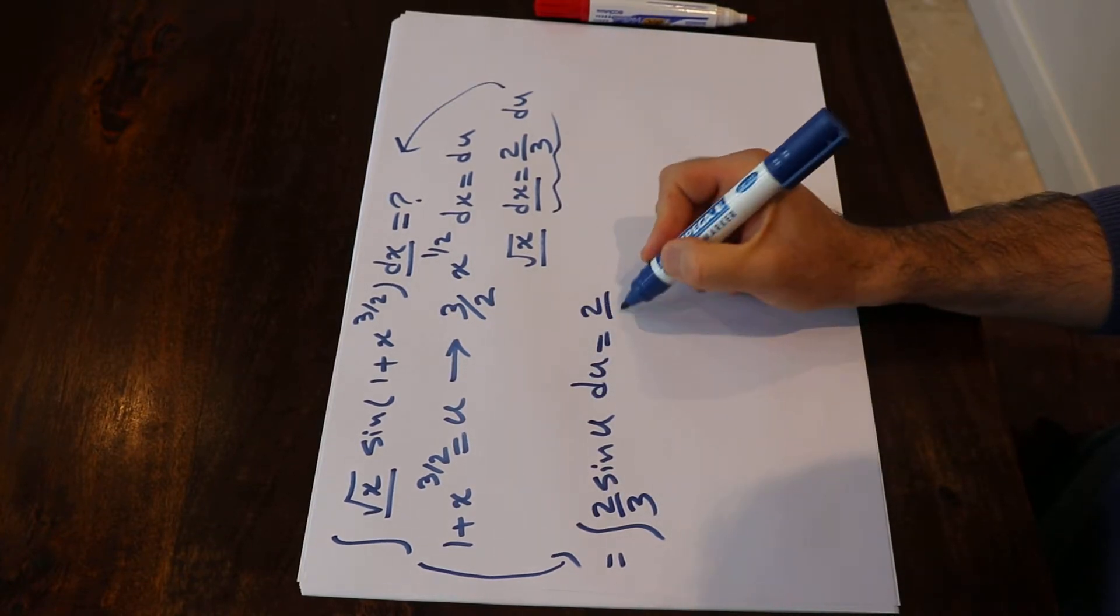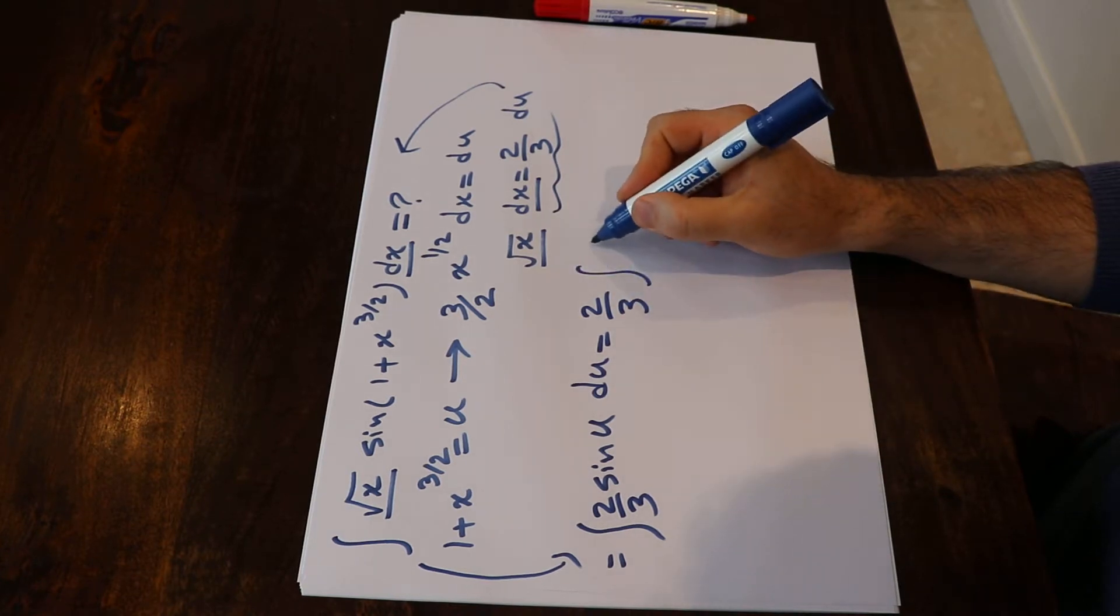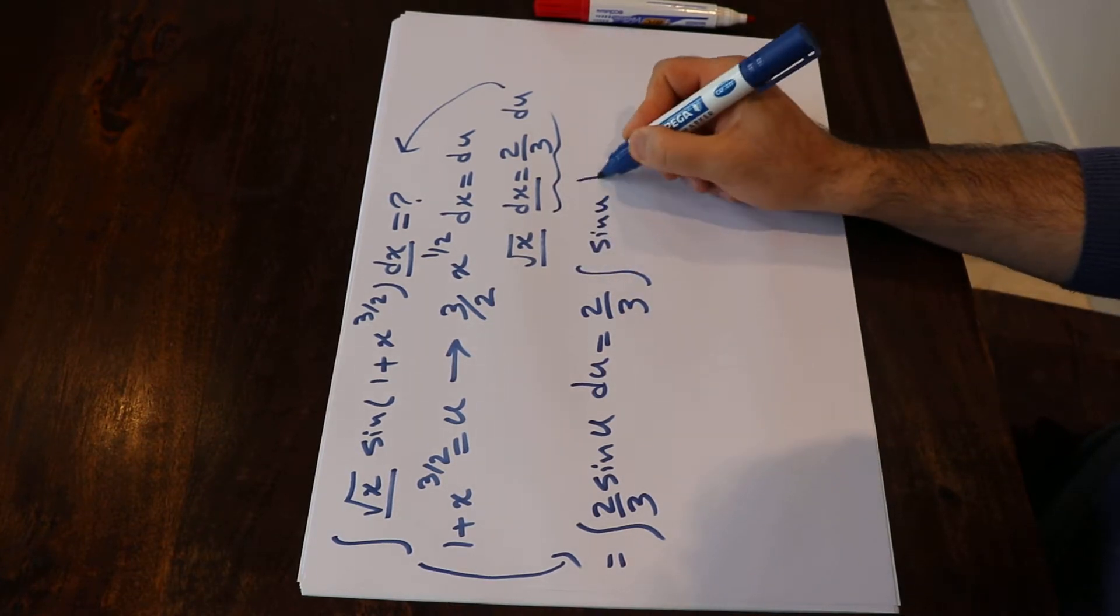Since 2/3 is constant, I can take it out of the integral. That will be 2/3 times integral of sine u du.